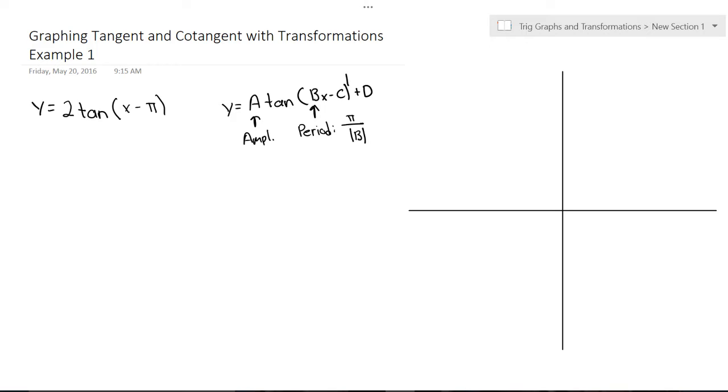Then we've got C, which helps us figure out our phase shift, which is our horizontal shift, and that can be defined as C divided by B. Then we've got this D, which is just our vertical shift.